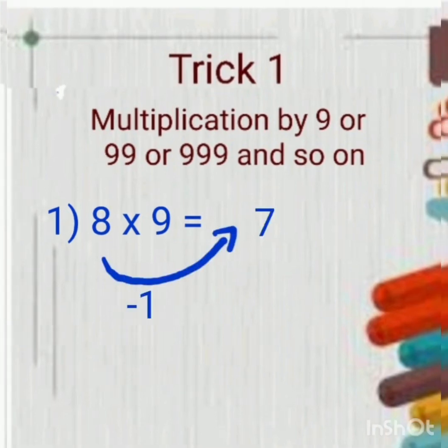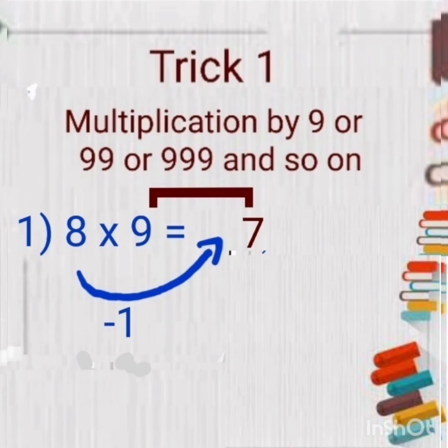We will subtract 1 from 8. That means first number is 8, from that you will subtract 1. So 8 minus 1 is 7. And here you can see I have written 7.